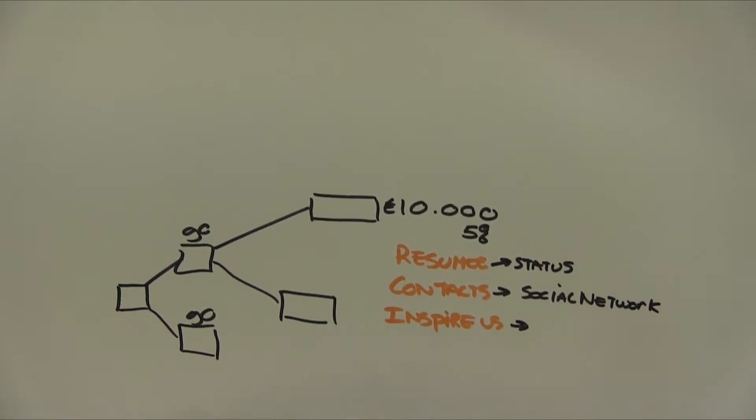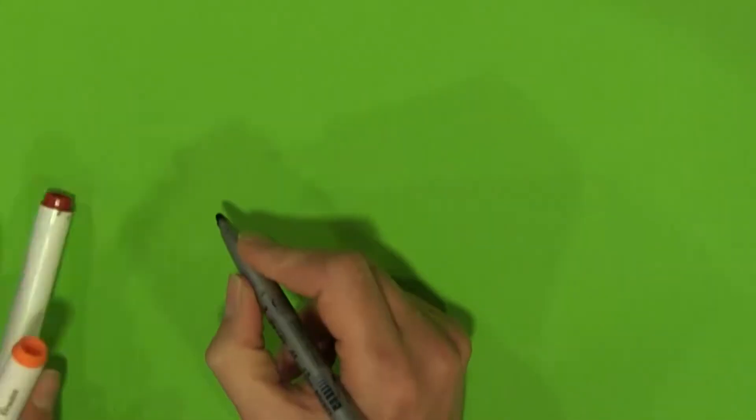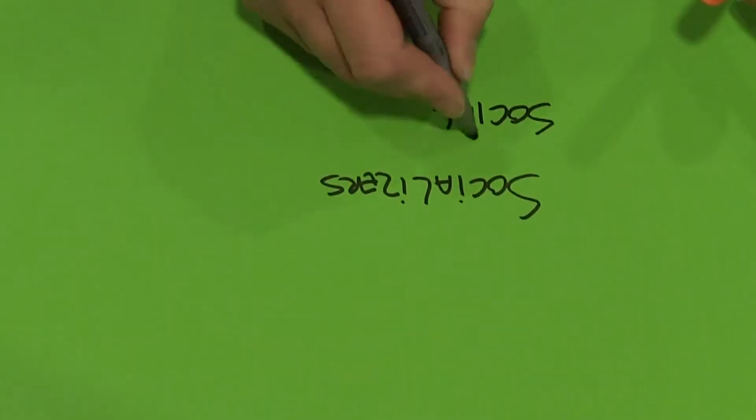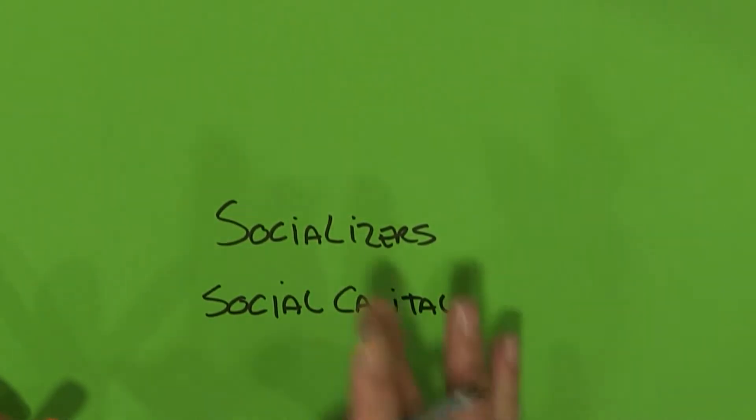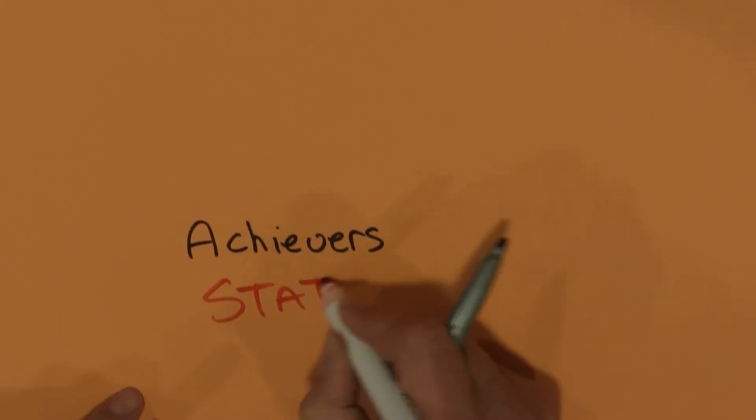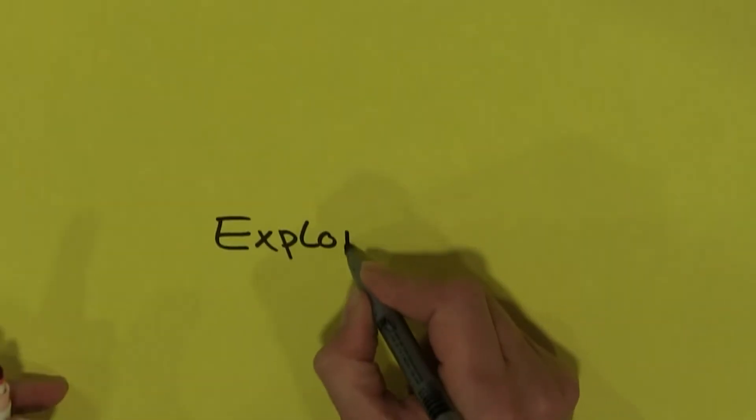Now, in our model, we're going to alter the categories ever so slightly. We're going to be putting the gamification together with the tree. Let's recap the tree. If we have a look at that, our resume. This is our status. We can increase our status with this. Our contacts. This is our social network that we are going to be increasing. And our inspiration, we could translate as exploring.